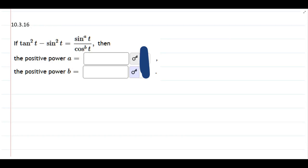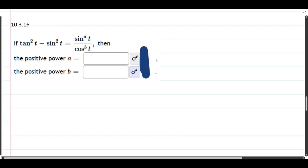because looking at what our goal is, our goal is written in terms of just sines and cosines. So, let's go ahead and turn tangent into sine over cosine.